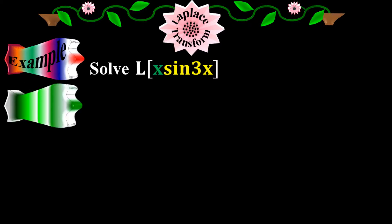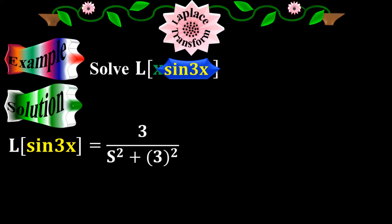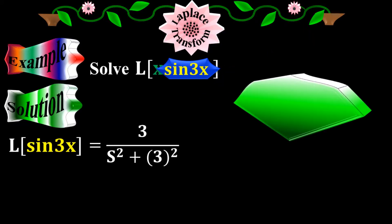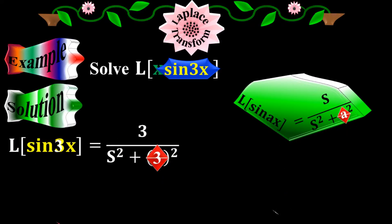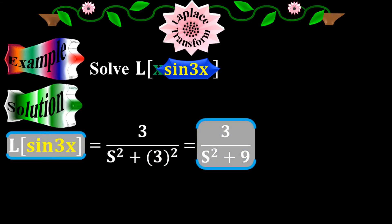To find the Laplace solution, take sine 3x first, which is the third elementary function. Laplace of sine 3x equals 3 over s squared plus 3 squared. Applying the third elementary condition — Laplace of sine(ax) equals a over s squared plus a squared — where the constant a is 3, this gives 3 over s squared plus 9.